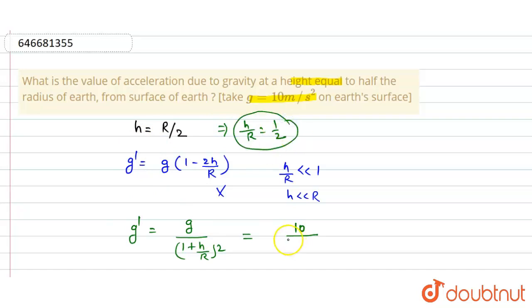And this is 1 by 2 whole squared and we get this is equal to 10 divided by 1 plus 1 by 2 becomes 3 by 2, and this is 3 by 2 whole squared.